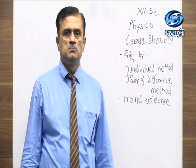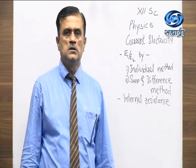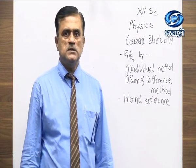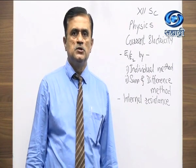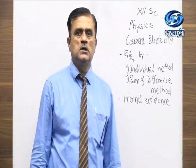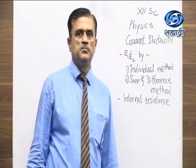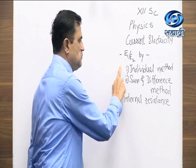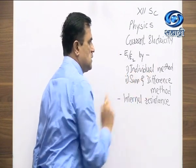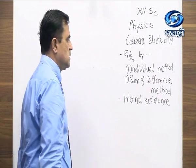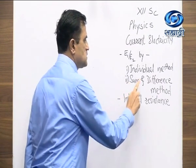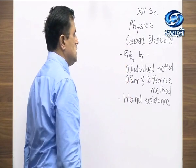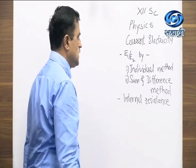Hello students, myself is Narayan Kulkarni, Physics Department from Ferguson College, Pune. In the last lecture we had seen the use of potentiometer to compare the EMFs of the cells. It is done in two ways: by comparing the EMF of the cells with the individual method, connecting the cells separately, and second by the sum and difference method. With these two methods we can find out E1 by E2.